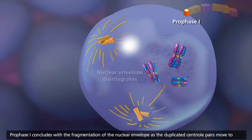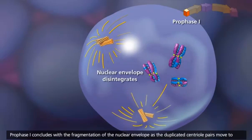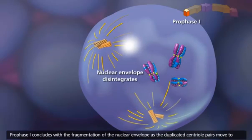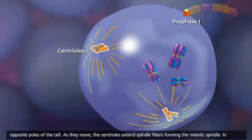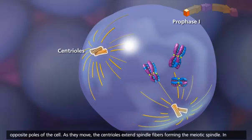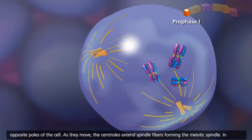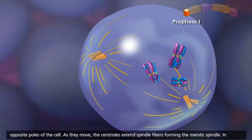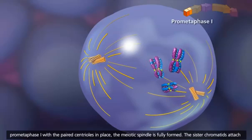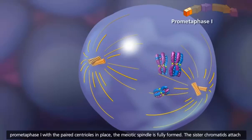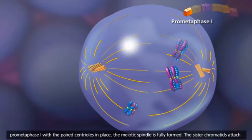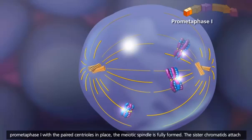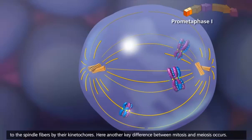Prophase I concludes with the fragmentation of the nuclear envelope as the duplicated centriole pairs move to opposite poles of the cell. As they move, the centrioles extend spindle fibers, forming the meiotic spindle. In prometaphase I, with the paired centrioles in place, the meiotic spindle is fully formed. The sister chromatids attach to the spindle fibers by their kinetochores.